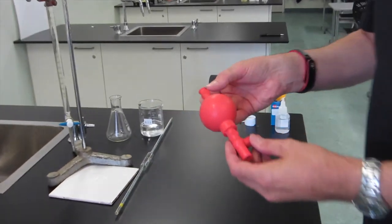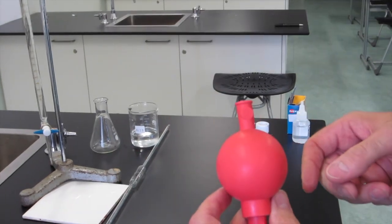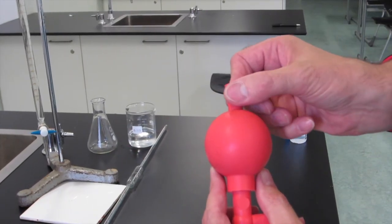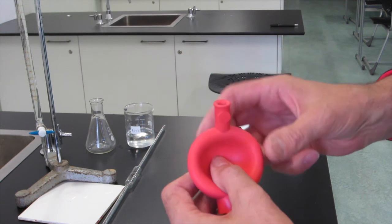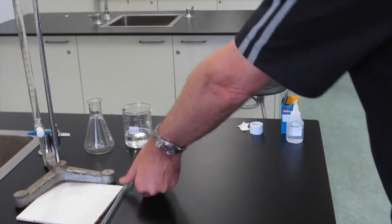Now we're going to look at how to use a pipette filler. There are several valves on the pipette filler, we're going to use the one at the top. You squeeze that and press in on the bulb and that evacuates the bulb and allows you to suck up solution.